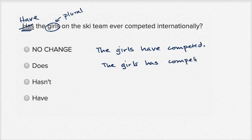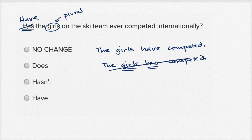Now the second one — you have 'girls,' that's plural, but then you're using the singular form 'has.' The girls has — no. The girl has competed, or the girls have competed. So you definitely don't want to use 'has.' You want to use 'have.'